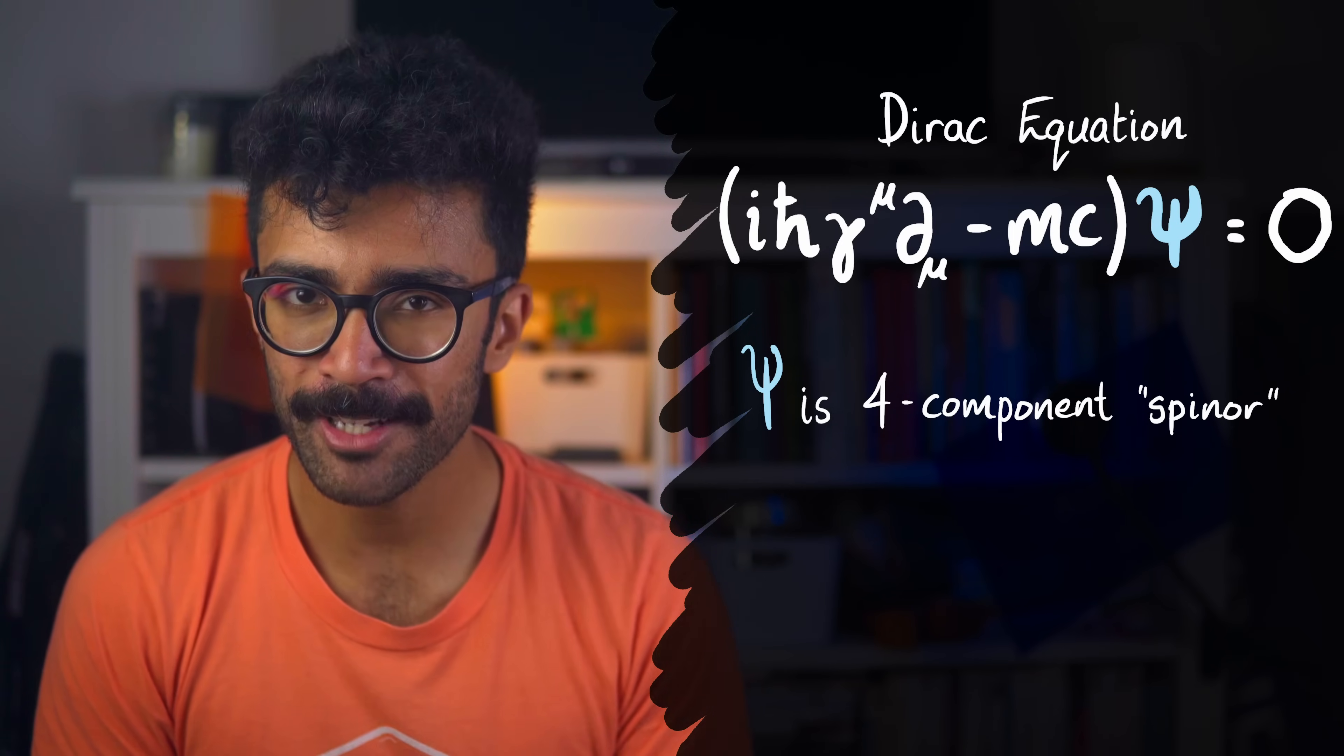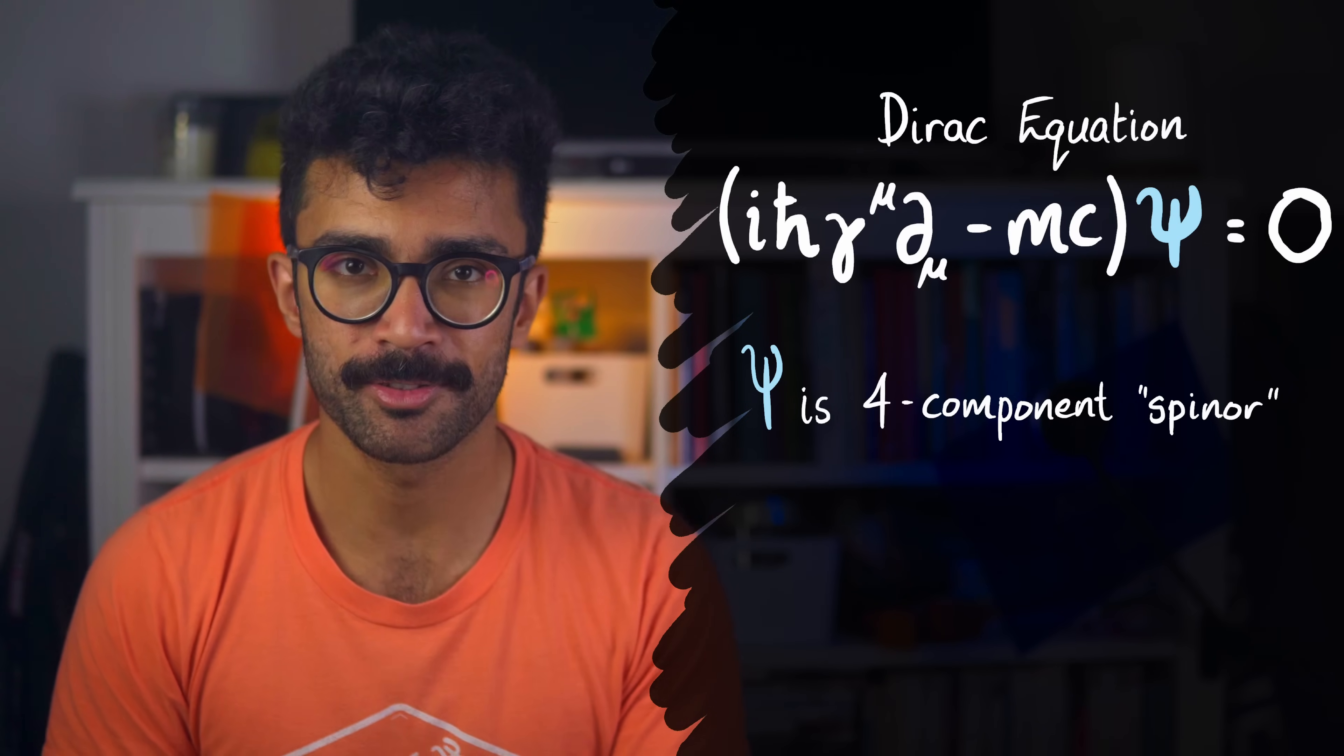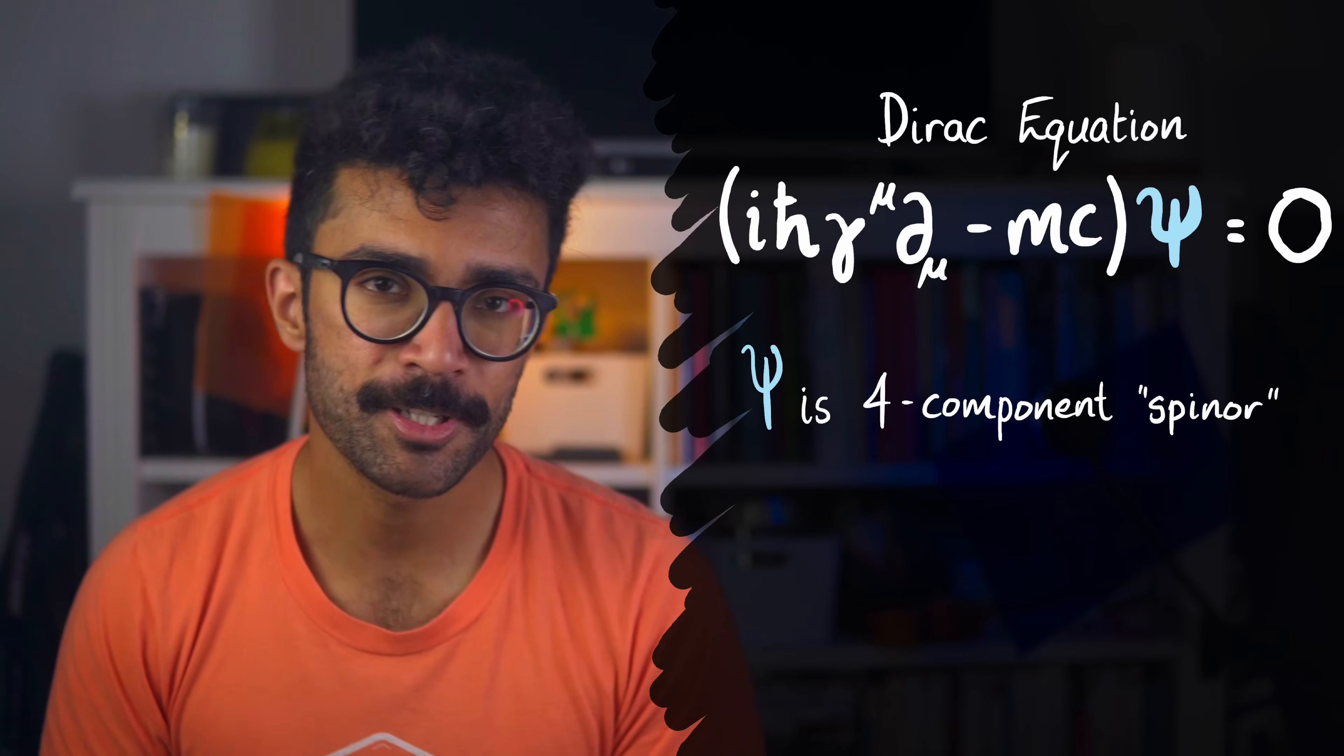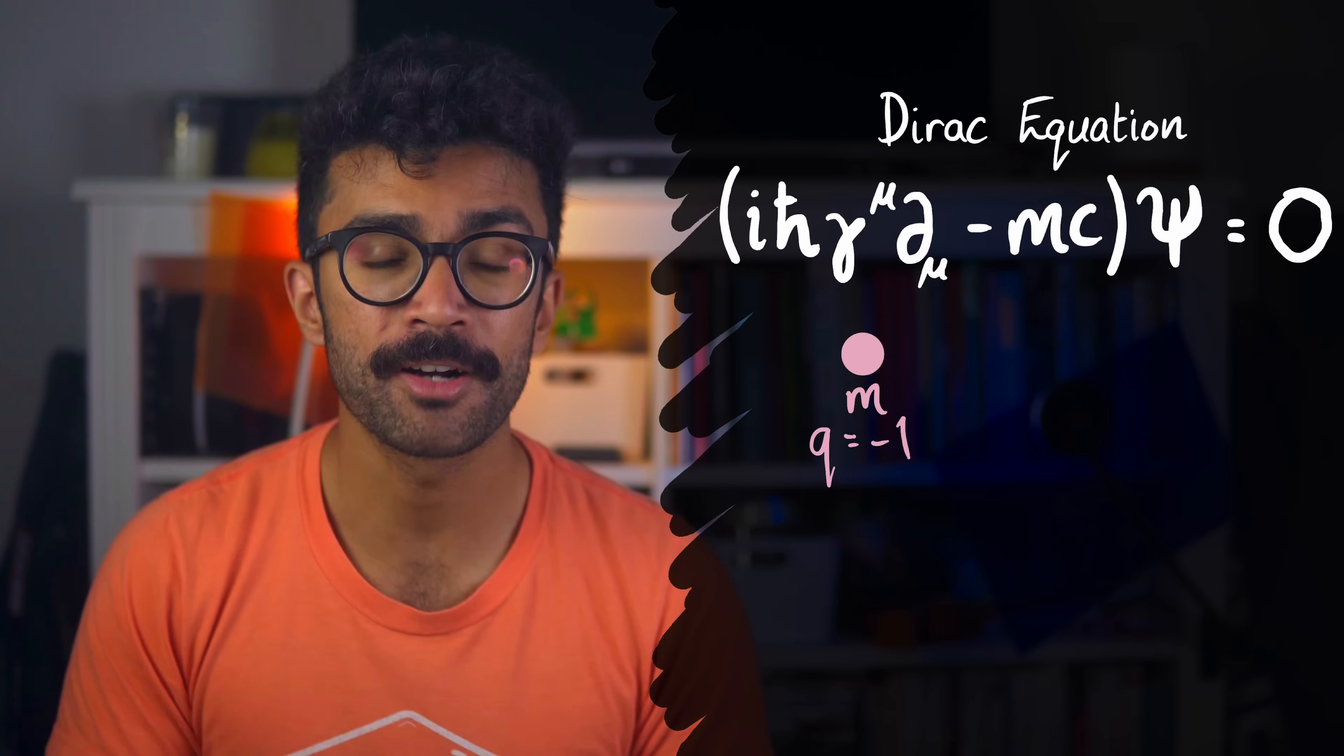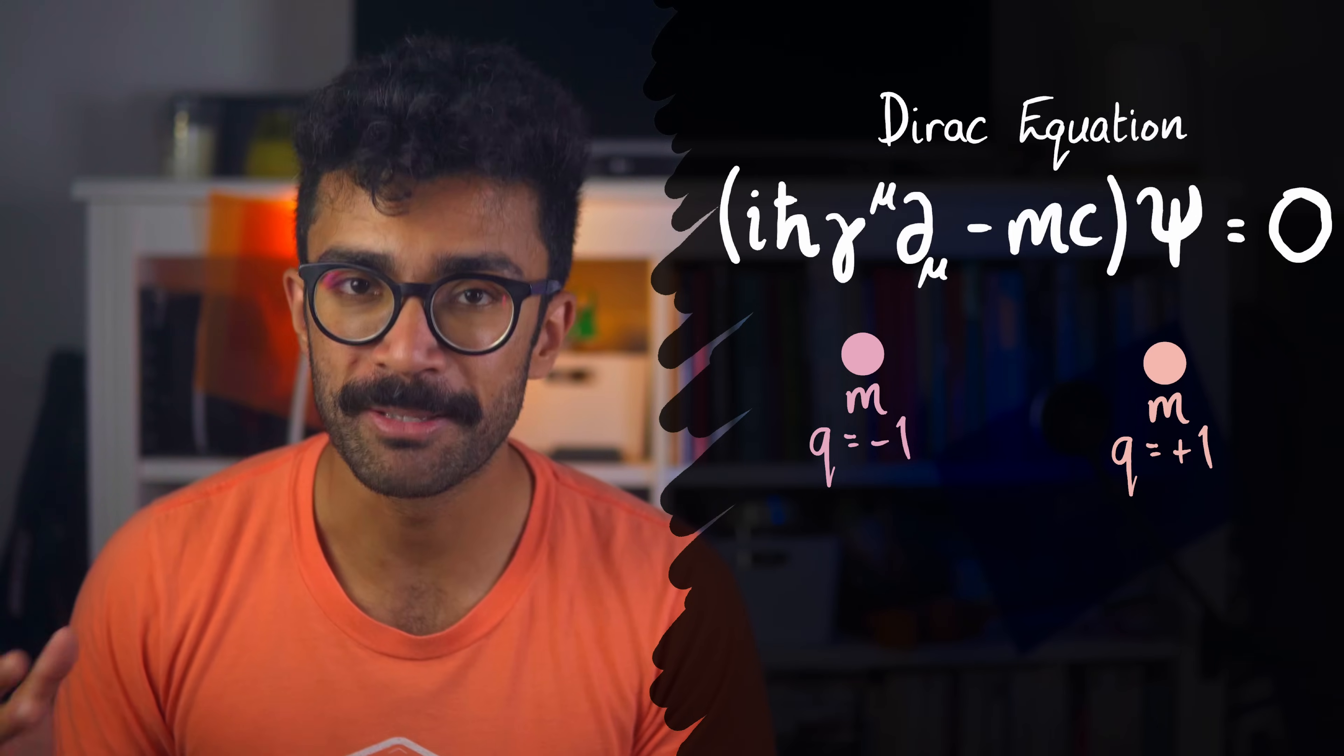Also, the Dirac equation first predicted the existence of particles which have the same mass as particles that we're already familiar with, but have the exact opposite charge. So for example, if an electron normally has a given mass and a charge of minus one unit, then the Dirac equation said that a particle with the same mass, but with plus one unit of charge, should also be possible.